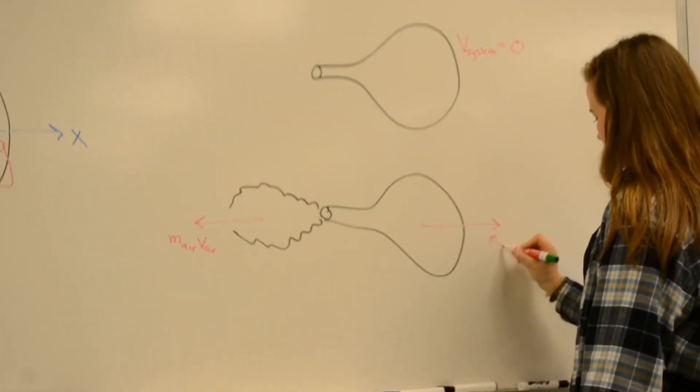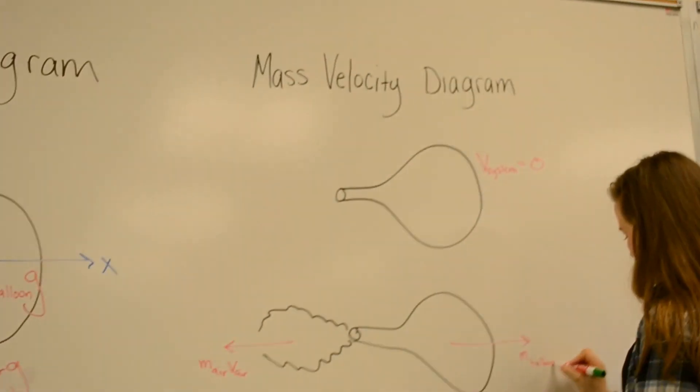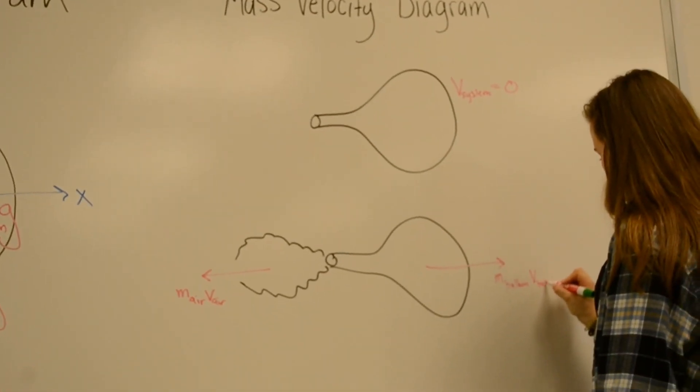Since this is a mass velocity diagram, we can't forget that each vector is mass times the respective velocity.